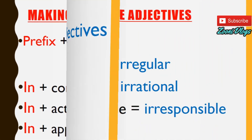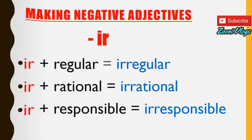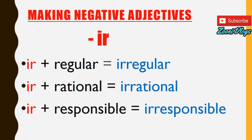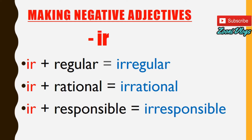The prefix 'ir-' — spelled I-R — gives us 'irregular,' 'irrational,' and 'irresponsible.'